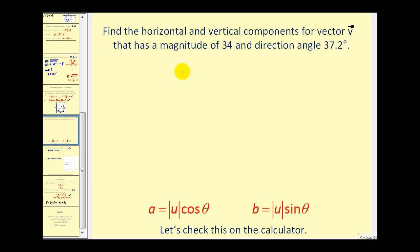We want to find the horizontal and vertical components of vector v that has magnitude 34 and direction angle 37.2 degrees. Let's sketch this as a position vector. This would be 37.2 degrees with magnitude 34. So we know we're in the first quadrant.